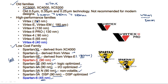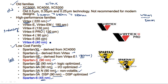Coming to high-performance families — these are older families used for industries. All these high-performance families are Vertex families, where we have started with 220 nanometer technology, later jumped to 180 nanometers, 130 nanometers, and the technology has still progressed to 90 nanometer, 65 nanometers, and 40 nanometer technology.